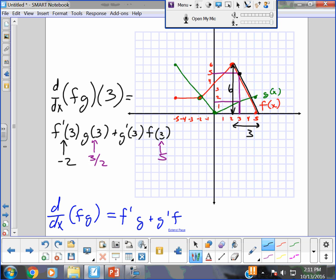And g prime of 3, what's the one thing we know right away looking at g prime of 3? It's positive. It is positive, positive, positive. It's running 5 and rising 2. I think it's 2 fifths.